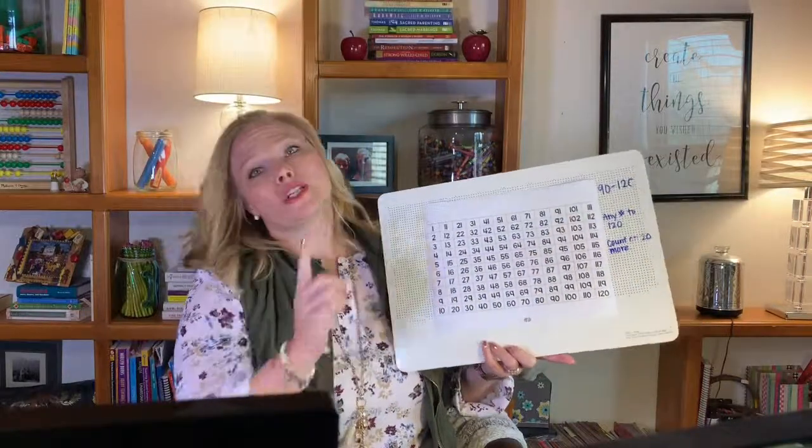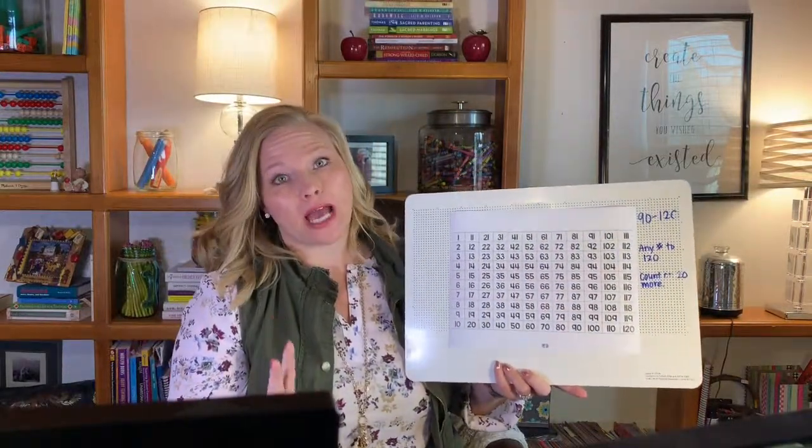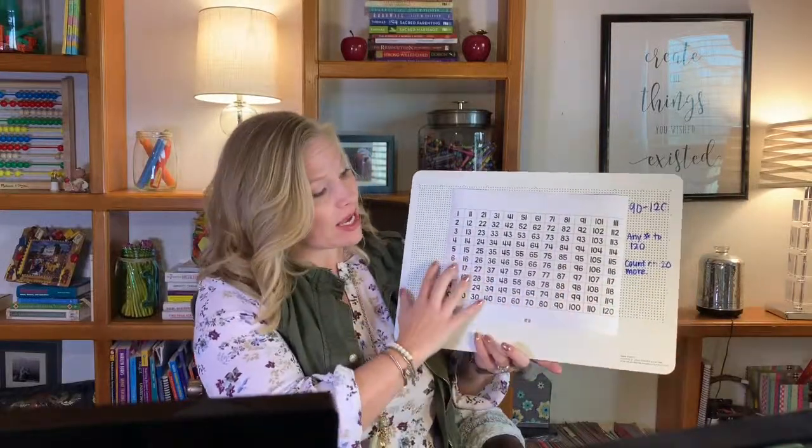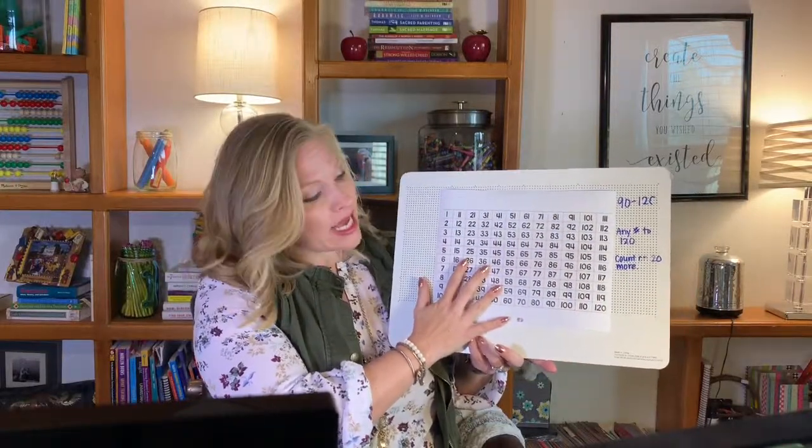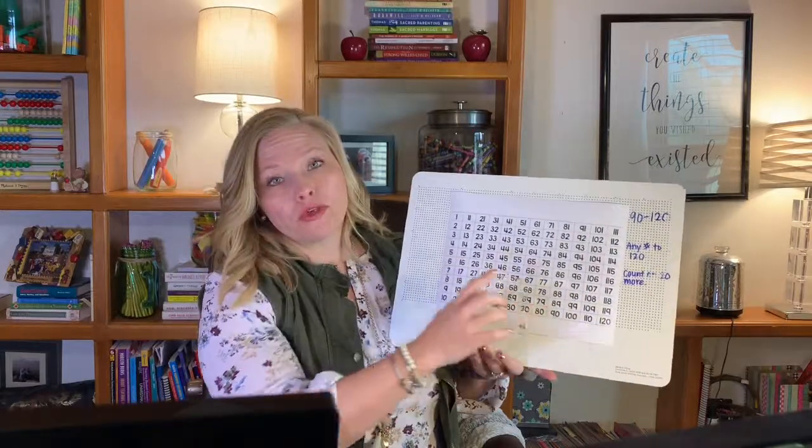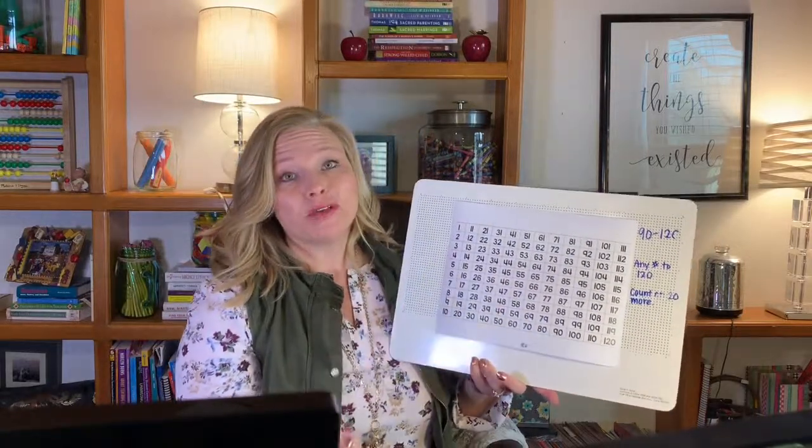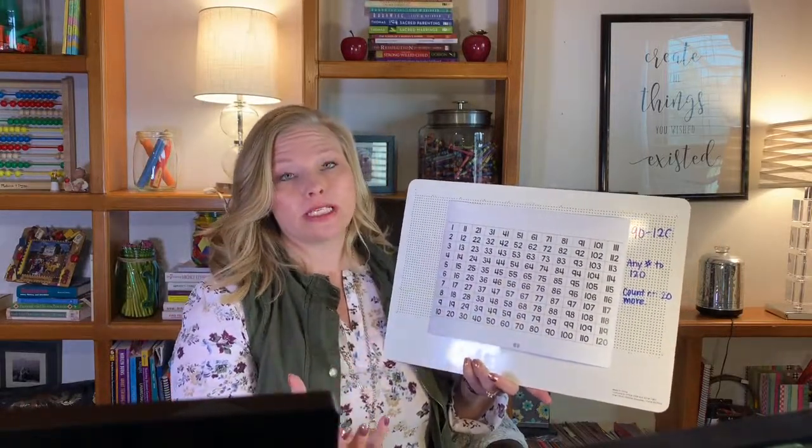So we're going to talk right now specifically about first grade volume two. And this is after you have done the 120 chart at least two times. So you have gone all the way through the 120 chart. I just have a paper version for today. And you've made it all the way through by adding two, three, or four every day.